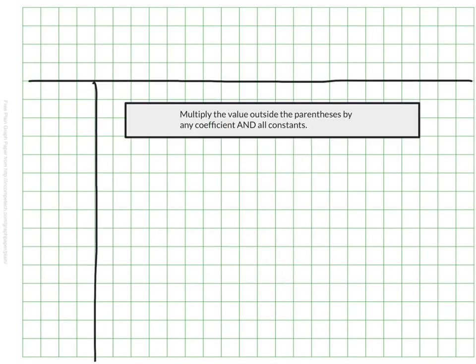Overall, we really just need to remember that when we are distributing, whether it's a whole number or not, we need to be sure we are multiplying the value outside the parentheses by any coefficient and by any and all constants that are inside the parentheses. The same is true if the multiplier is negative.